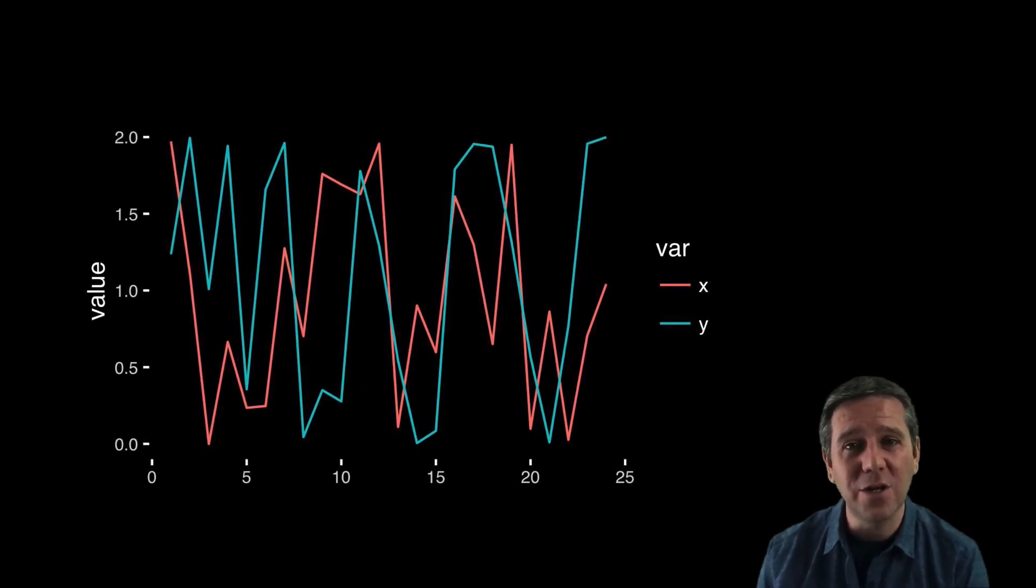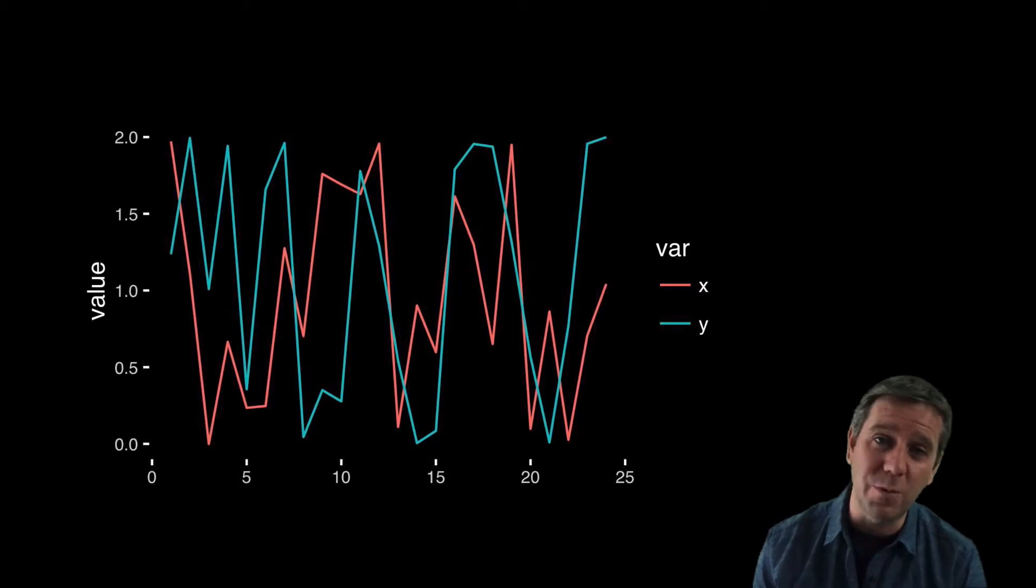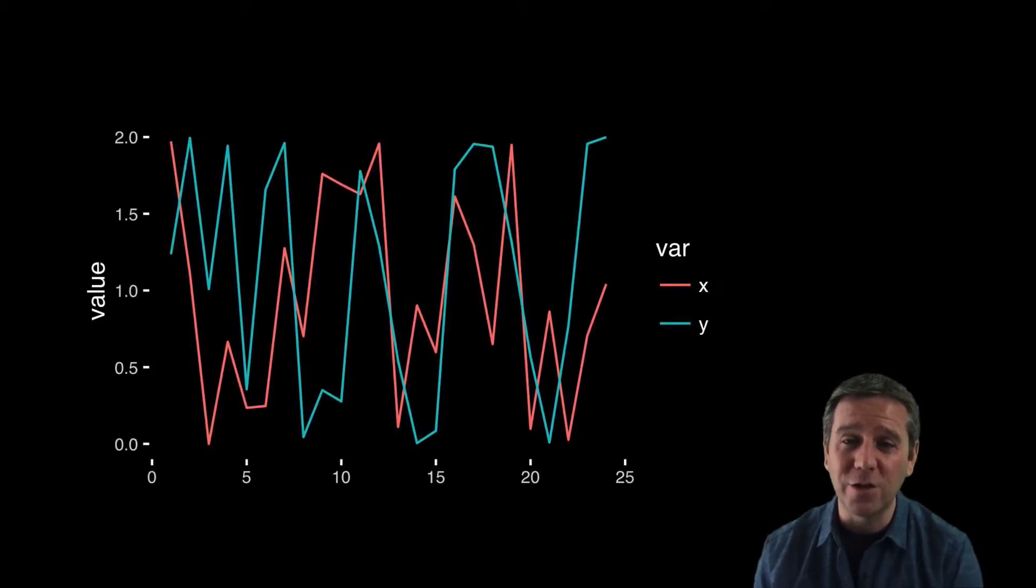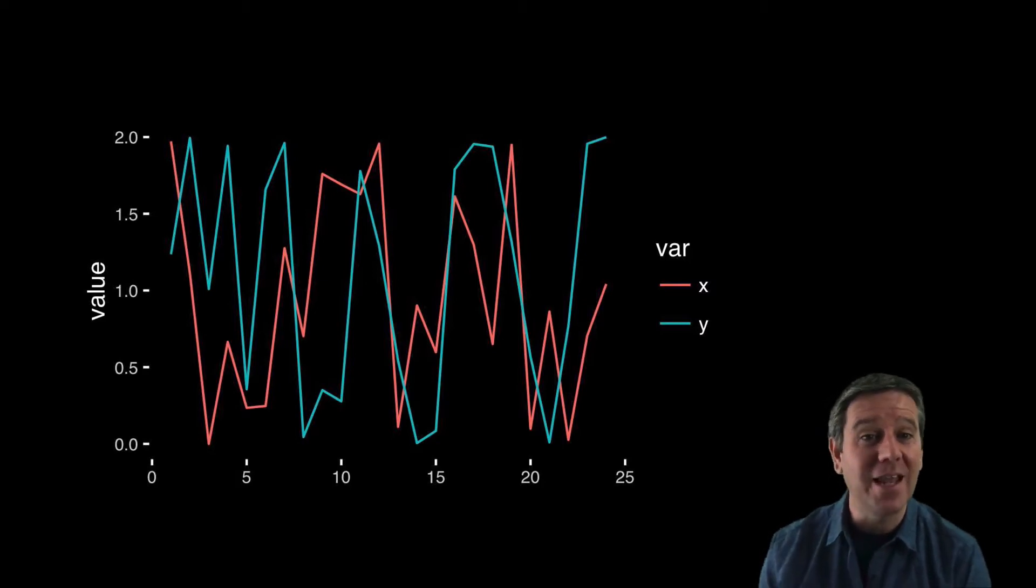Now a side note is that we might have picked a different way to plot the data. For example, we might have made a plot like this first, where rather than X versus Y, we've plotted X and Y separately versus their row number. This would be common in time series data, where our data points are collected at different times, and the bottom axis here would be time.